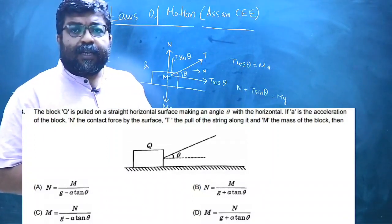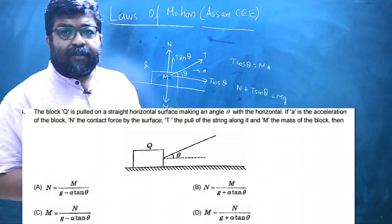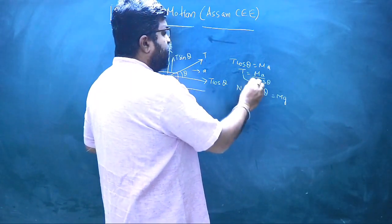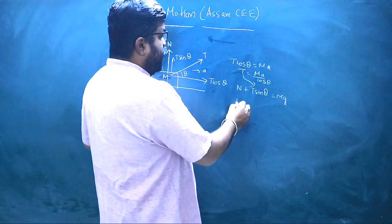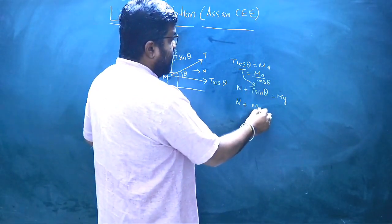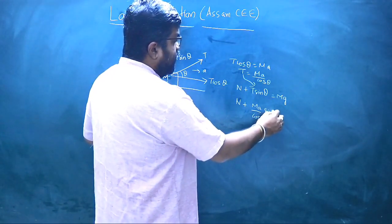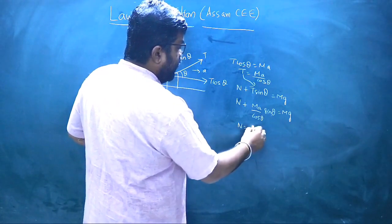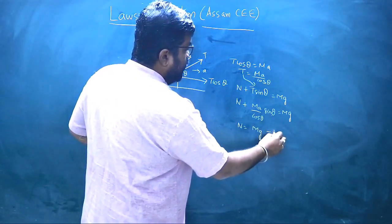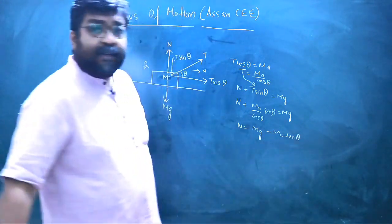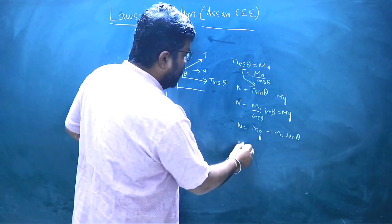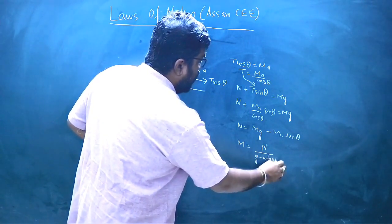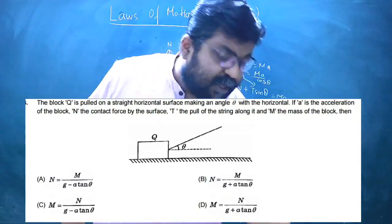There is no tension term in option 2. From the horizontal equation, T = MA / cosθ. Substituting into the vertical equation: N + (MA / cosθ) × sinθ = Mg, which gives N + MA tanθ = Mg. Therefore, N = Mg − MA tanθ, or N = M(g − a tanθ). The correct option is C.